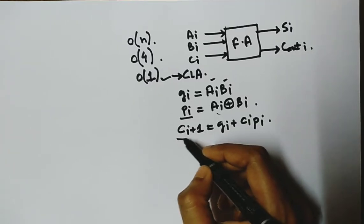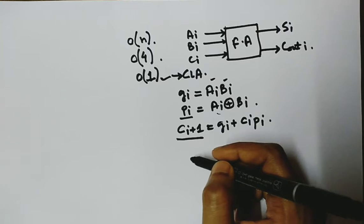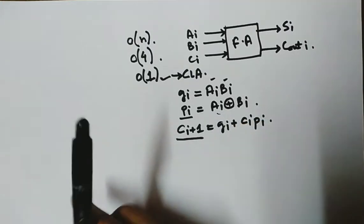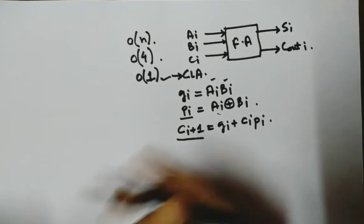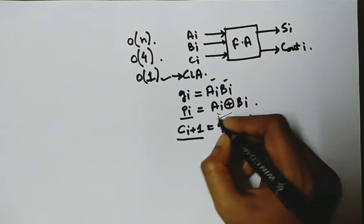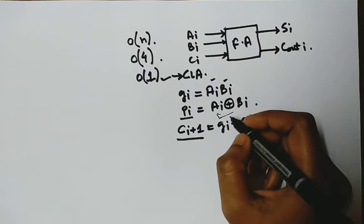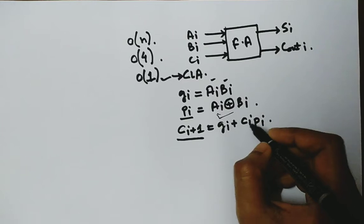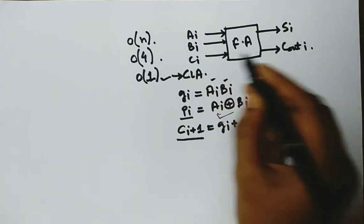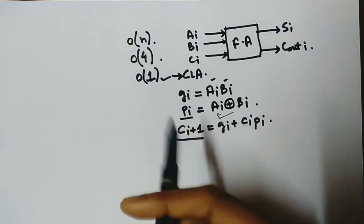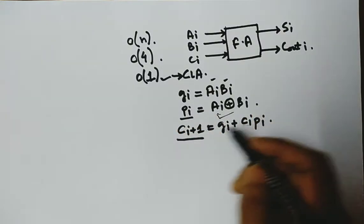So input carry of the next stage, that is i plus one stage, will be carry generated if there is carry generated, or if input carry is there in the ith stage and it is propagated to the next stage. So this is the equation.